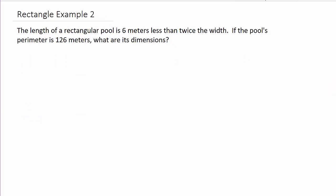So here it says the length of a rectangular pool is six meters less than twice the width. If the pool's perimeter is 126 meters, what are its dimensions? Alright, so the first thing we want to do is let's go ahead and draw the pool. So we'll draw a rectangle.